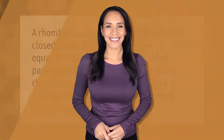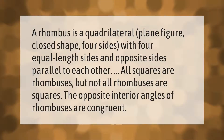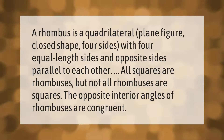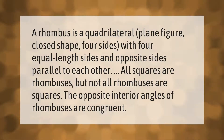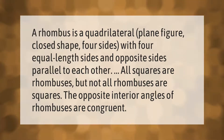A rhombus is a quadrilateral: a plane figure, closed shape, four sides with four equal length sides and opposite sides parallel to each other. All squares are rhombuses, but not all rhombuses are squares. The opposite interior angles of rhombuses are congruent.